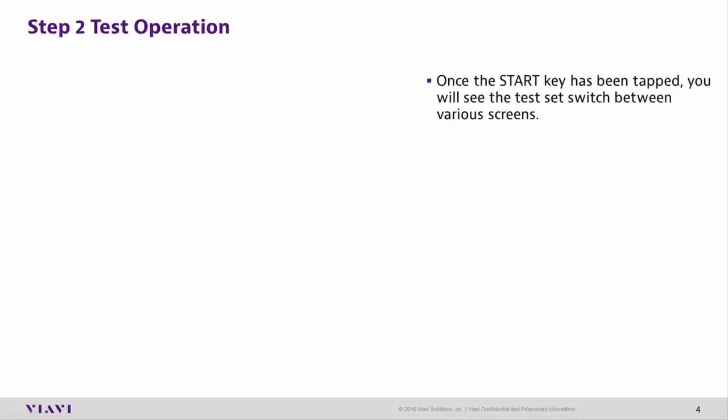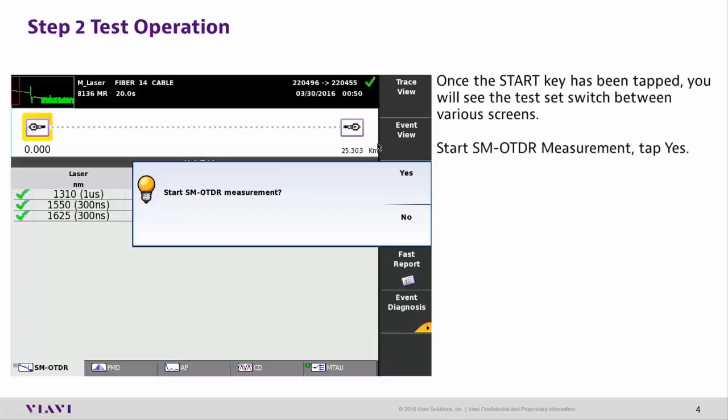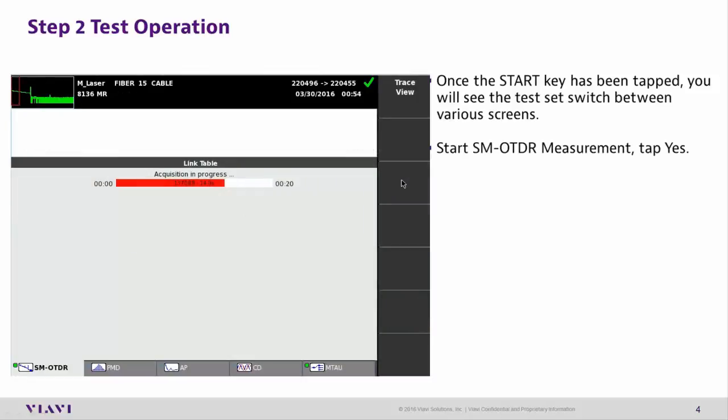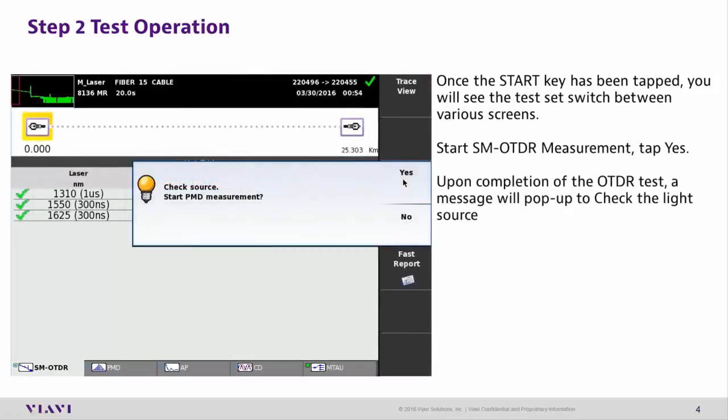Step 2: Test Operation. Once you tap the Start soft key, the unit will switch through various screens. The unit will ask if you want to start the OTDR measurement — tap Yes. Upon completion of the OTDR test, a message will pop up asking you to check the light source.